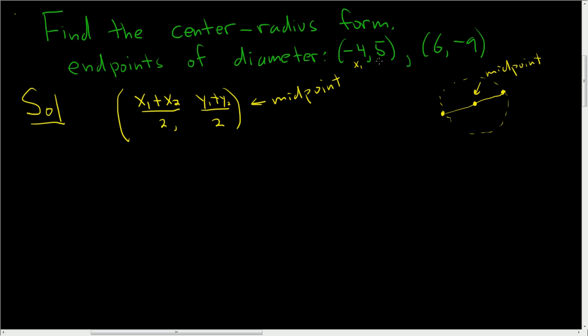So this could be x₁, this could be y₁, this could be x₂, this could be y₂. So if you add -4 plus 6, I'll write it down, -4 plus 6, and you divide that by 2, that will give us the x-coordinate for our center. And then 5 plus -9 divided by 2, that should be the y-coordinate for the center.